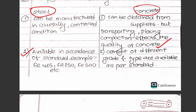The next point is available in accordance with standards. If we have steel, we have to use the standard — for example, grades F4, F2, F5. Cement of different grades and types are available as per the standard.